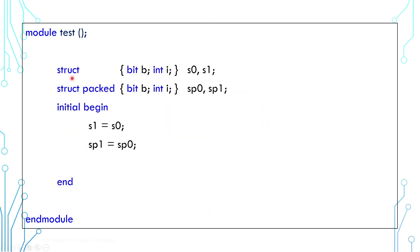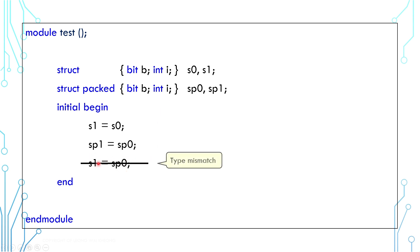There are two unpacked structures, sp0 and sp1, and two packed structures, sp0 and sp1. Even though both structs have one bit and one int, they are not of the same type. You can assign from one structure variable to another of the same type — like s0 to s1, or sp0 to sp1 — but you cannot mix and match different structure types, such as assigning sp0 to s1.